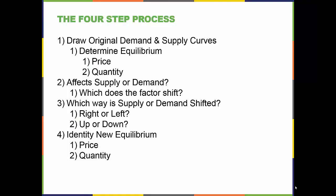As factors shift supply and demand, we need to understand the effect on equilibrium price and quantity. Things can get pretty complicated, especially if both demand and supply are shifting at the same time. To keep things straight, there are four basic steps that we can follow. Step one: draw the original demand and supply curves, including determining the original equilibrium — that is, the equilibrium price and the equilibrium quantity.